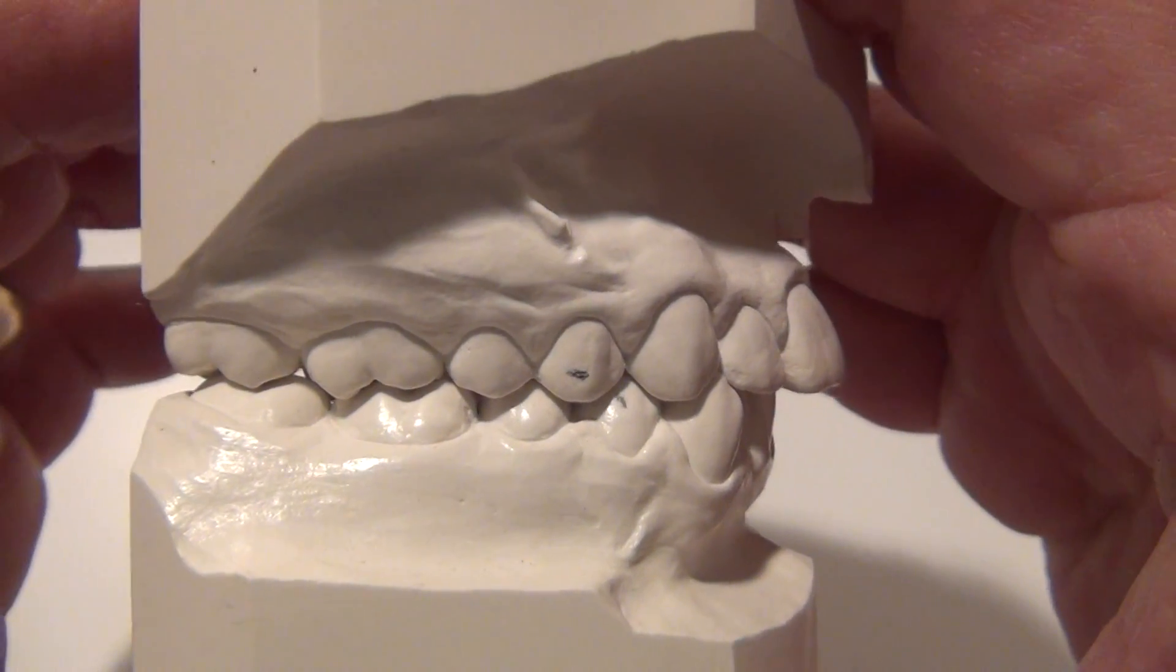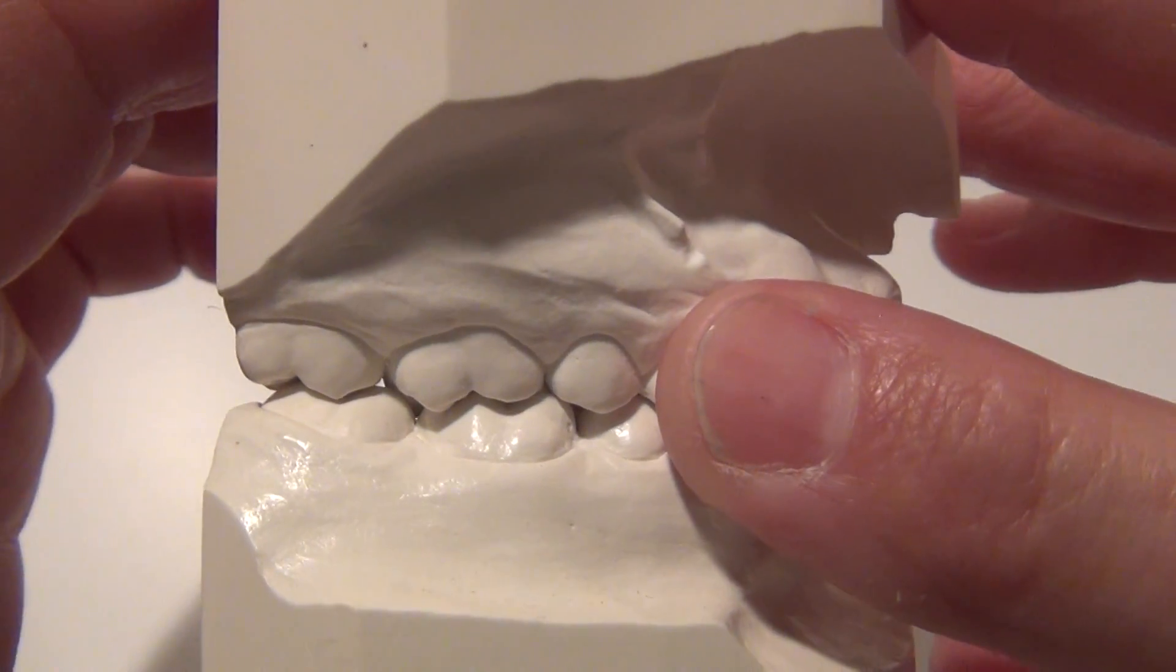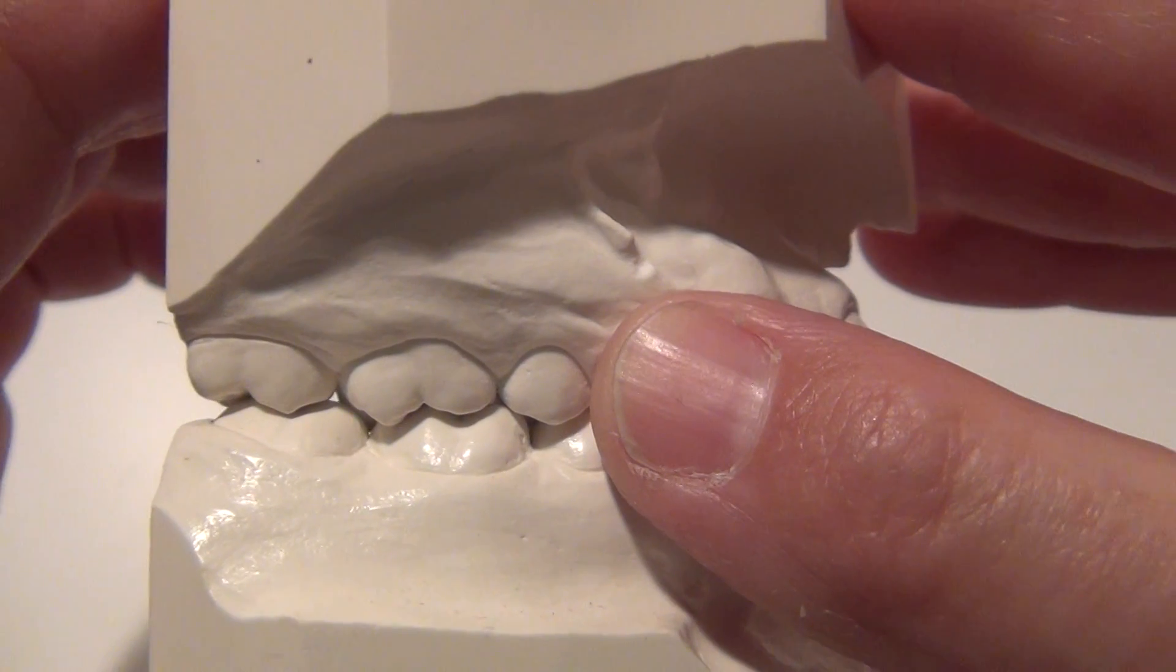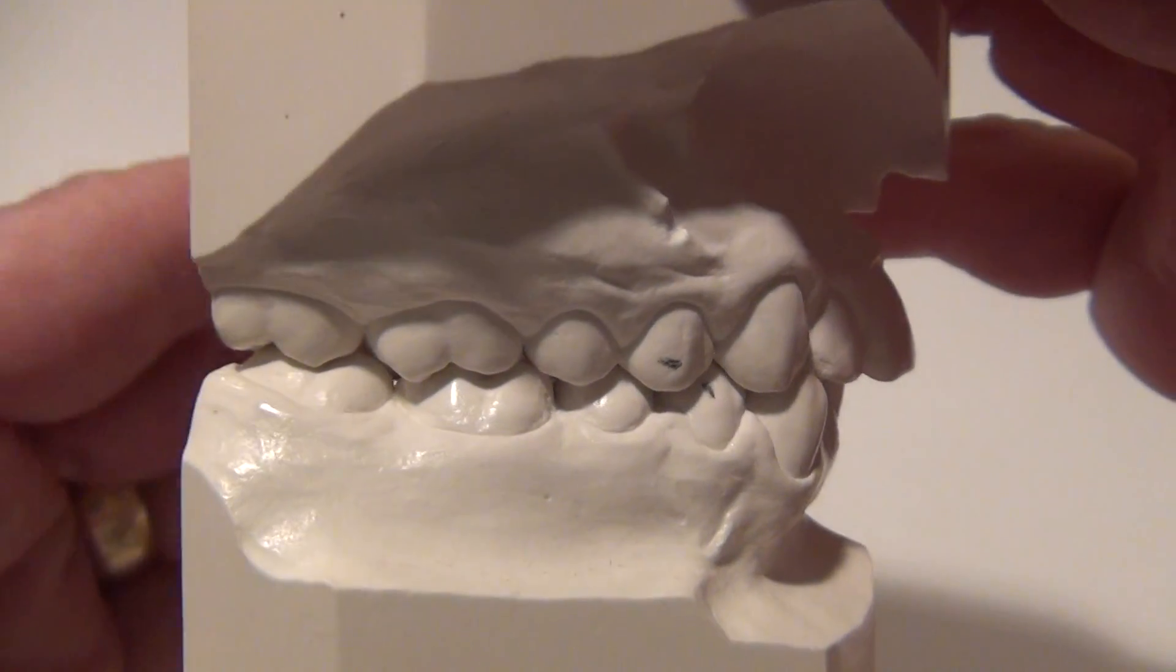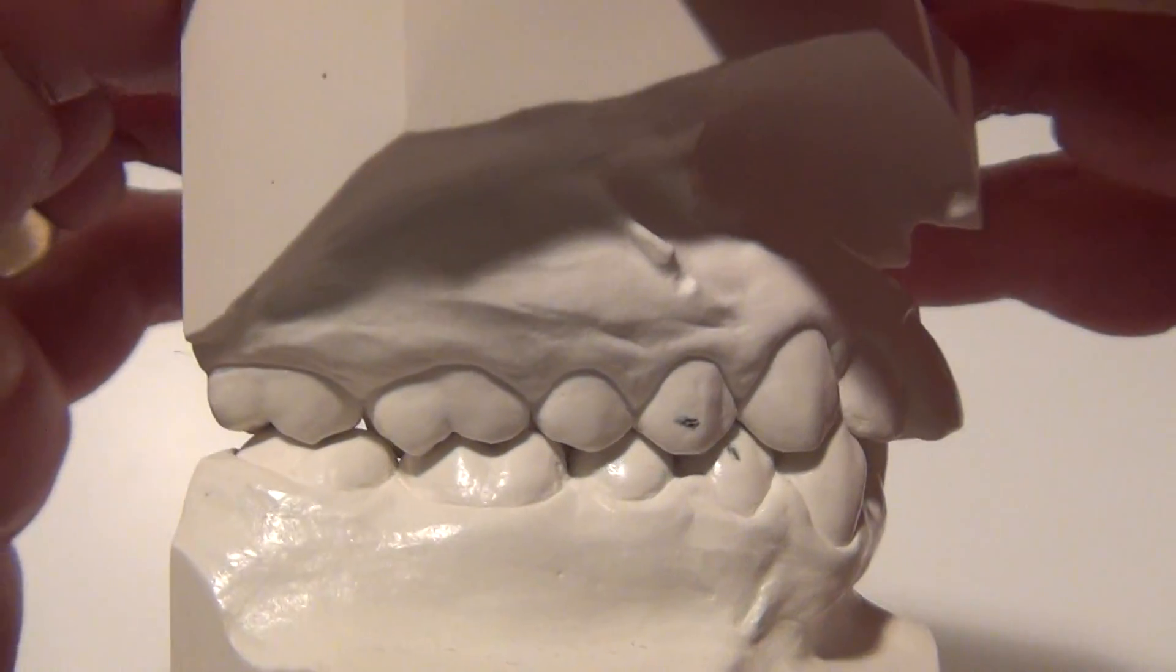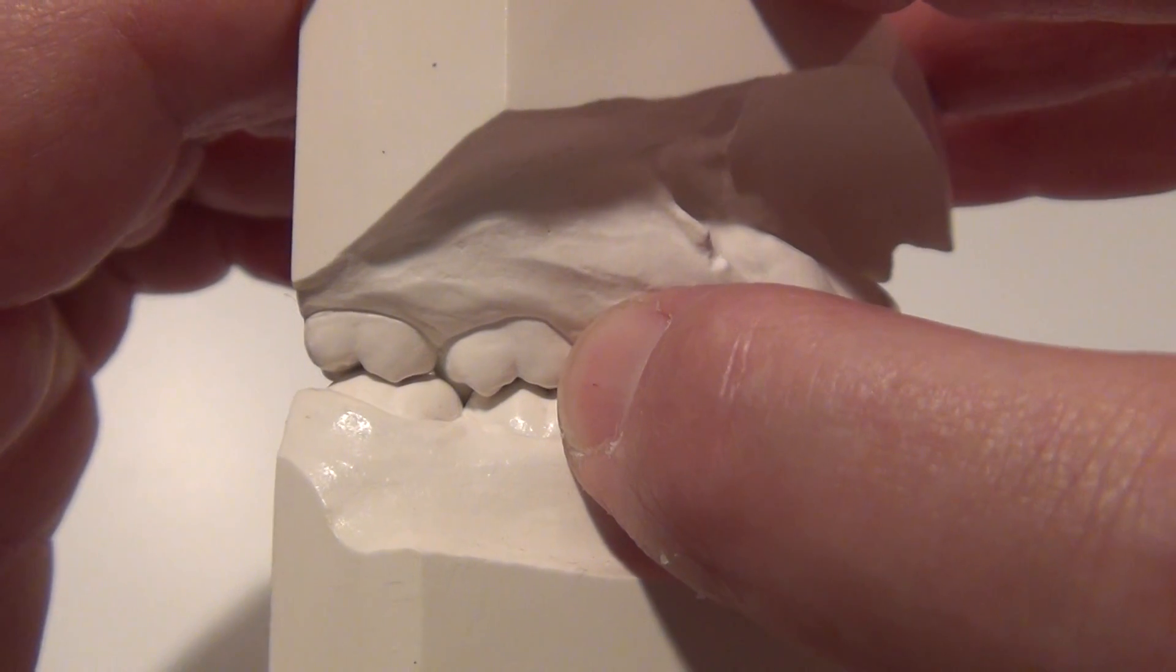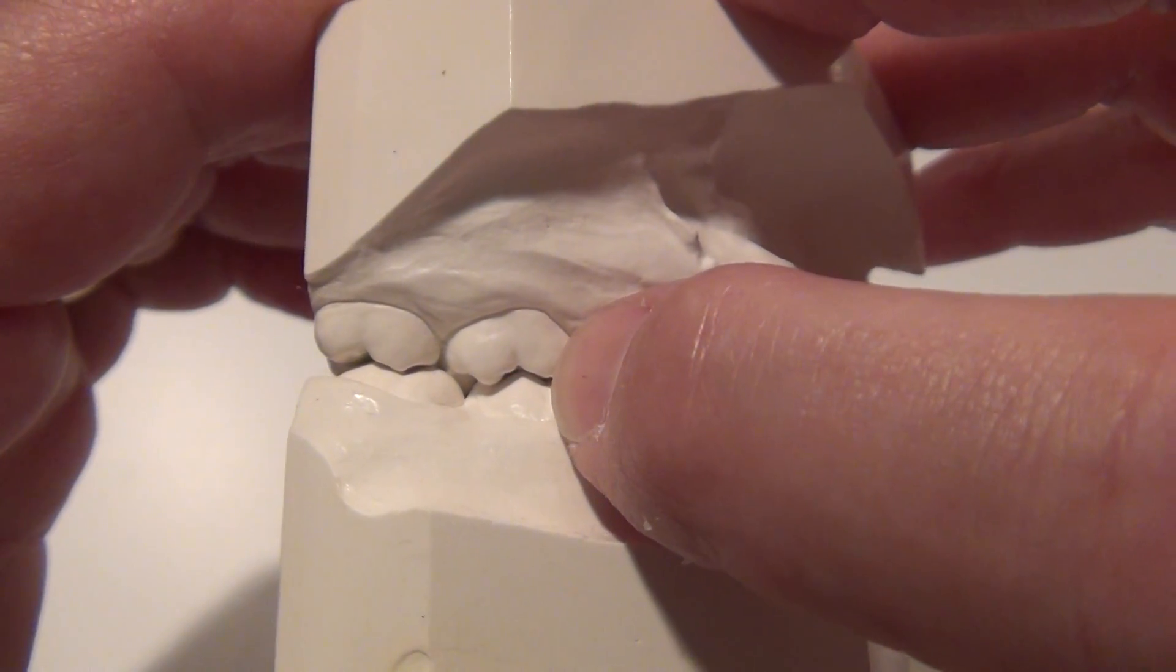What you're looking at now is a class 1 molar. Class 1 by definition is the mesial buccal cusp of the upper first permanent molar fits into the buccal groove of the lower first permanent molar. That's the definition of a class 1 molar relationship. Mesial buccal cusp tip of the upper first permanent molar fits into the buccal groove of the lower first permanent molar.